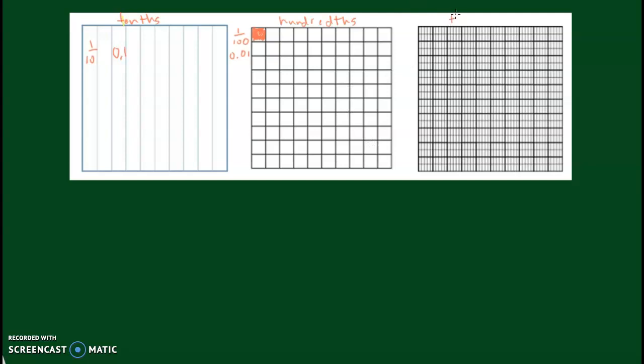Which brings us to the thousandths square. In this square, each tiny rectangle is equal to one-thousandth, or 0.001. There are one thousand of these tiny rectangles in the whole square.